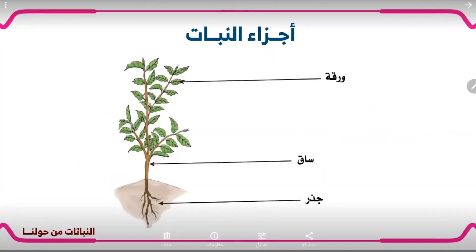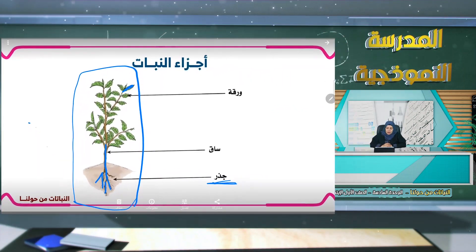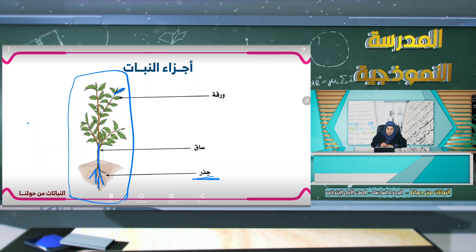الآن سوف ننتقل إلى درس جديد وهو أجزاء النبات. سنتابع في هذه الرسمة هذا النبات وسوف نتعرف على أجزائه. هناك ورقة، وهناك ساق، وهناك جذر.